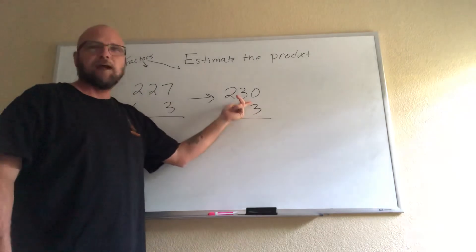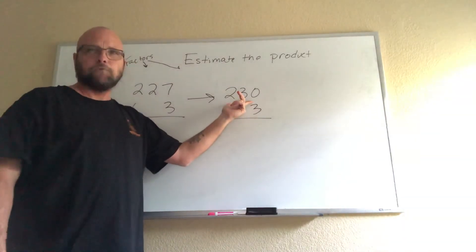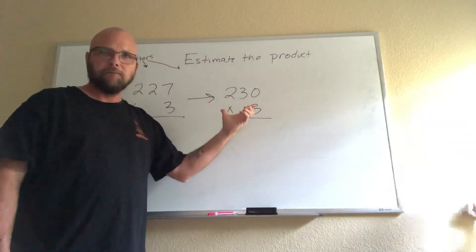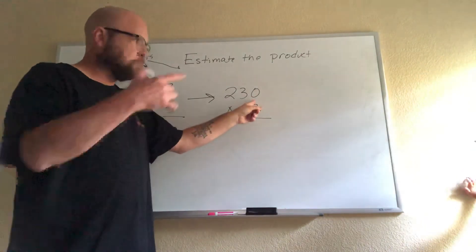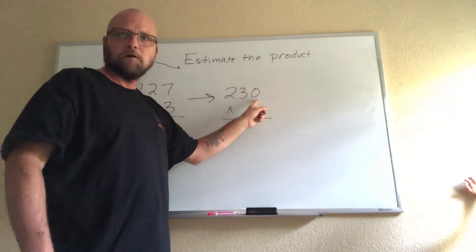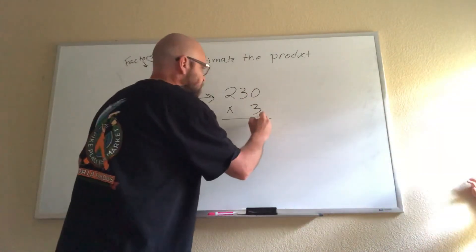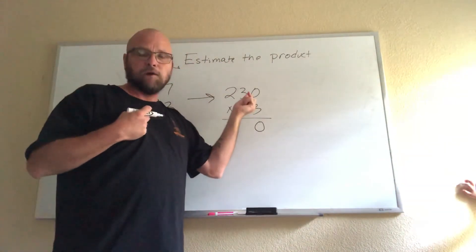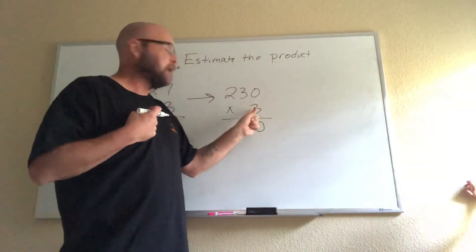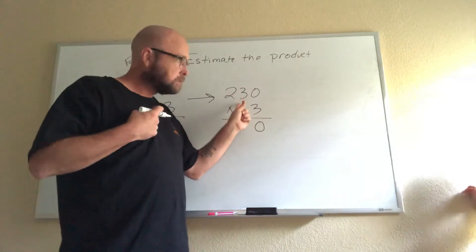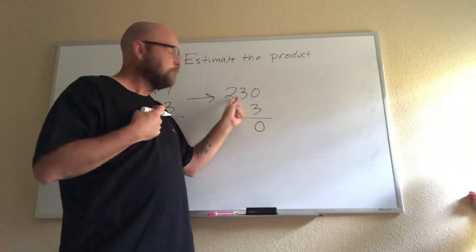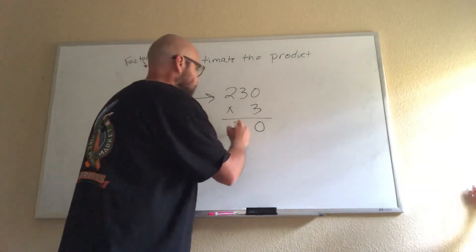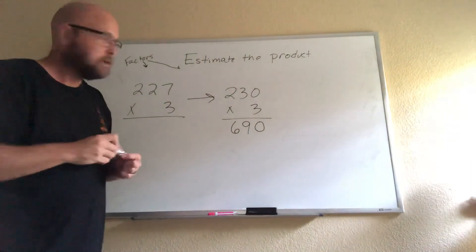Secondly, in my head I can do 23 plus 23 plus 23. I can do that in my head. My whole goal of estimating is to make this problem easier to do in my head. I have a trailing zero that I can just bring down in my ones place. And because I can do this, and I can do 23 in my head, that's why I picked 23. 23 times 3, because I can do it in my head, is 69. So my estimate is 690.